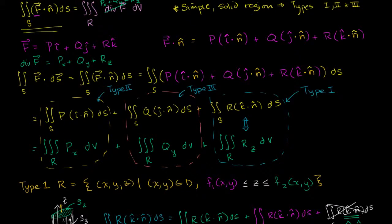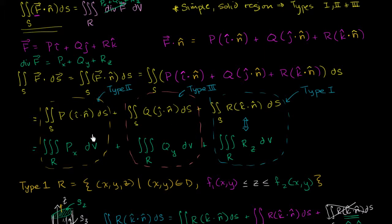Sometimes when you're doing a large multi-part proof like this, it's easy to lose your bearings. We're trying to prove the divergence theorem. We started off just rewriting the flux across the surface and rewriting the triple integral of the divergence. We said, if we can prove that each of these components are equal to each other, we will have our proof done. We're going to use the fact that this is a type 1 region to prove this part, the fact that it's a type 2 region to prove this part, and the fact that it's a type 3 region to prove this part. I'm going to show the fact that if it is a type 1 region, we can prove this, and you can use the exact same argument to prove the other two, in which case the divergence theorem would be correct.